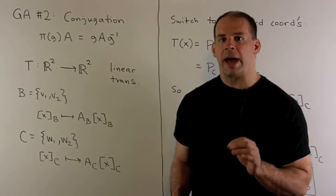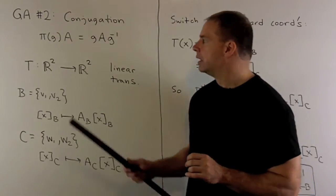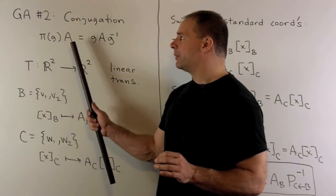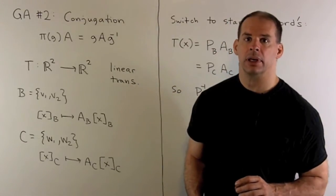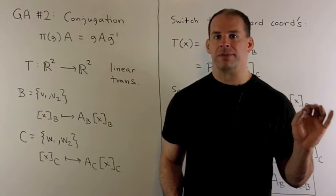If we want another group action where the space is the group itself, we consider conjugation. So here, if I take an element G in the group, π(G) on A, it's going to be G A G inverse. Here, we're going to start with change of basis and we'll see how conjugation falls out.